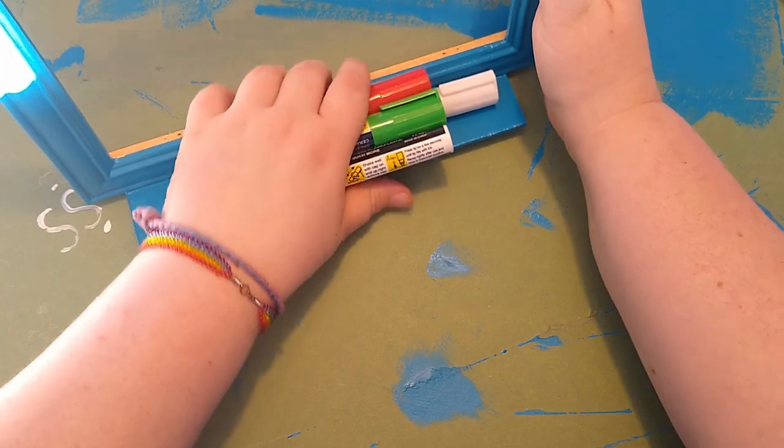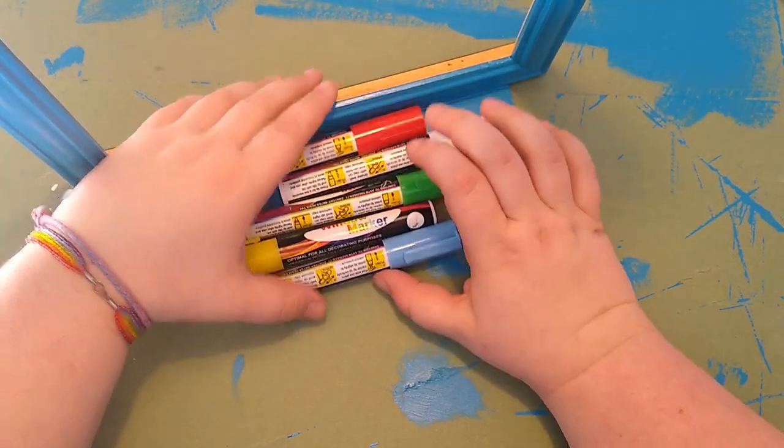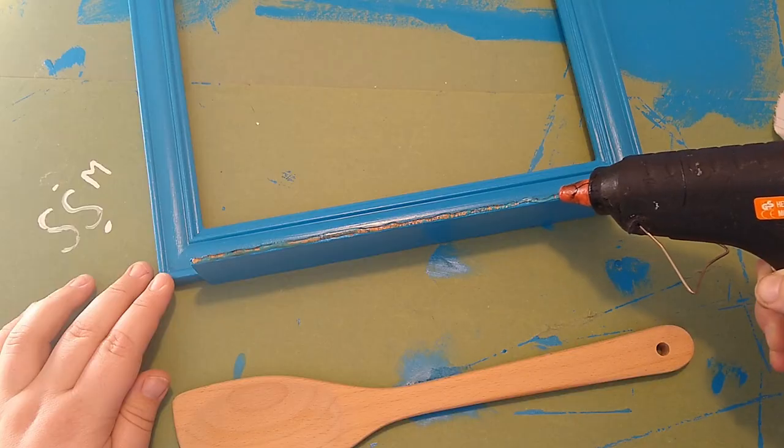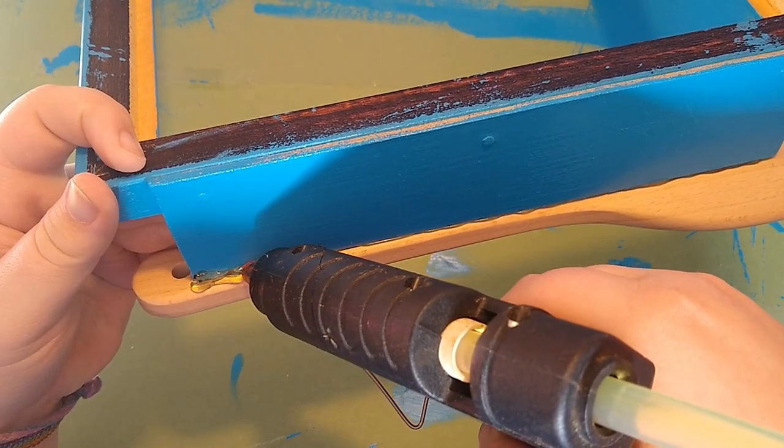Whilst that dries, I can come back to the frame. The tray needs a ledge to stop the pens from rolling off, so I got a wooden spoon and a hot glue gun and I'm simply gluing it on and adding a second bead underneath for more strength.